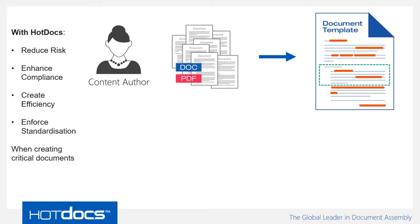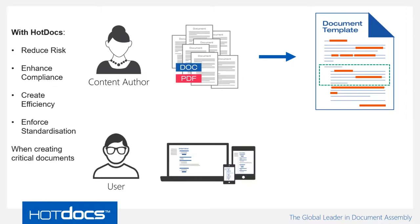We capture all the changeable pieces of information and business rules and insert HotDocs placeholders instead — we call that Phase One, the content authoring phase. Once you've created a template you can distribute it to end users. Instead of opening Word and manually editing or copy-pasting, users enter information into an interactive interview — a data gathering process — where questions appear and disappear depending on previous answers, in a web browser or on a tablet.